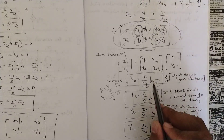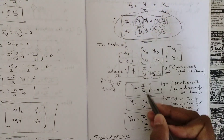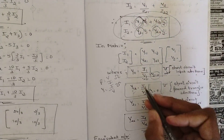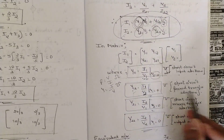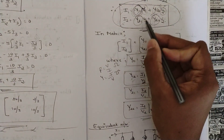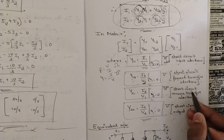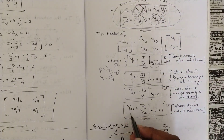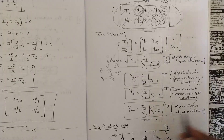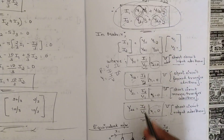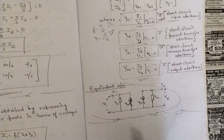Similarly, Y12 = I1/V2 when V1 = 0 — short-circuit forward transfer admittance. Y21 = I2/V1 when V2 = 0 — short-circuit reverse transfer admittance. Y22 = I2/V2 when V1 = 0 — short-circuit output admittance. Here Y11 refers to input (port 1) and Y22 refers to output (port 2). I have also written the equivalent network for Y parameters.